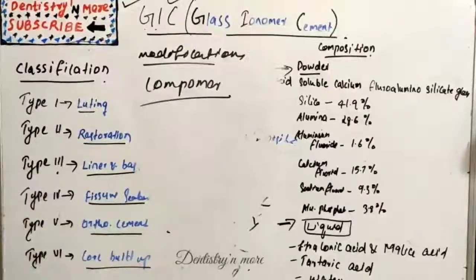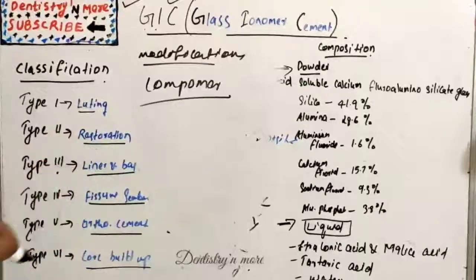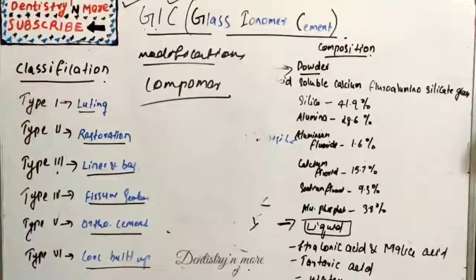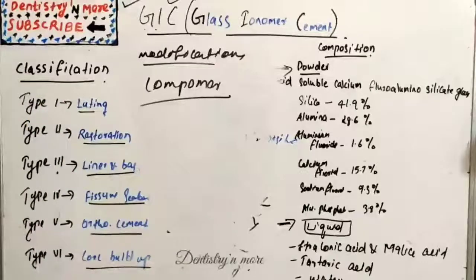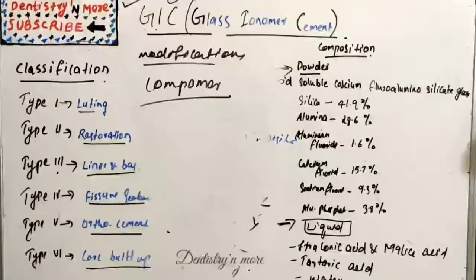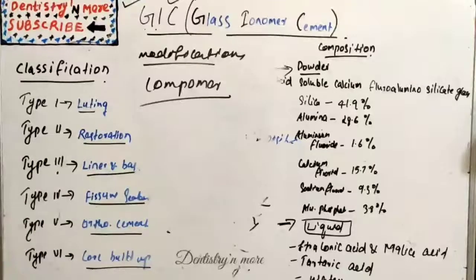Compomer is nothing but a composite resin which uses ionomer glass, which is the major component of Glass Ionomer. Small quantity of polyalkenoic acid is incorporated with filler particles. The setting reaction is by light activation, and the adhesive system used with compomer is based on acid etch found with all composite resins.